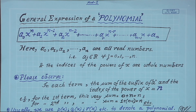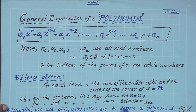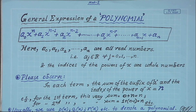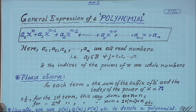Please observe: for the first term a₀, the 0 is called the suffix of a. For the second term, 1 is the suffix of a. For the first term, the sum of the suffix (0) and the index of the power (n) is 0 plus n = n. For the second term, suffix 1 plus index n minus 1 also equals n. For the general term aᵣxⁿ⁻ʳ, the suffix is r and the index is n minus r — their sum is again n. This is the magic of this expression.